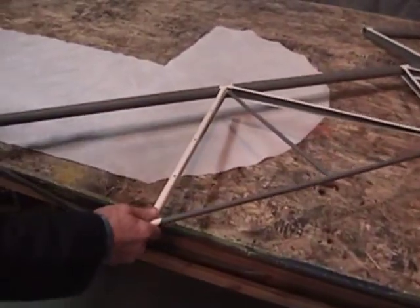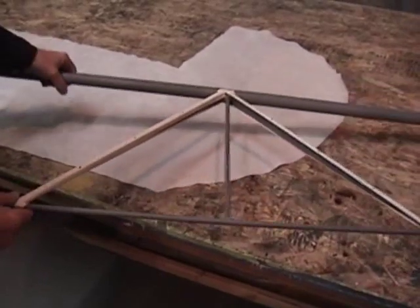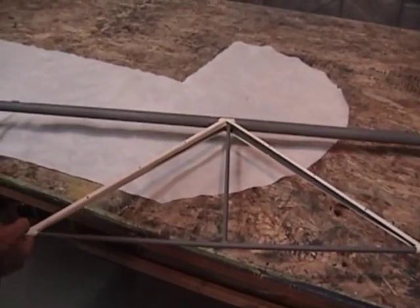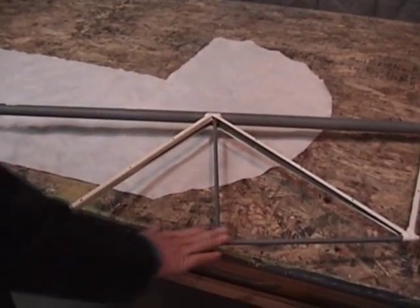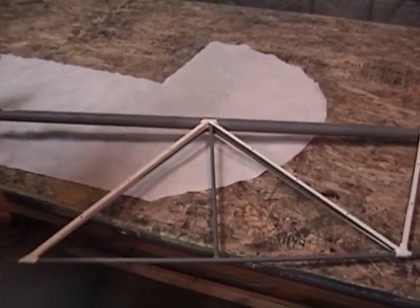So what we want to do in preparation to glue the fabric on here, is we're going to pre-glue this surface everywhere we want this panel of fabric to actually glue to the structure. So we'll go ahead and do that.